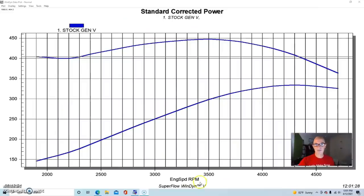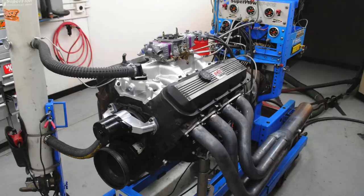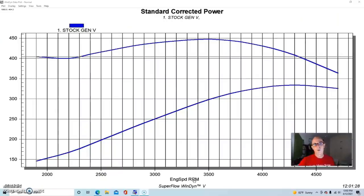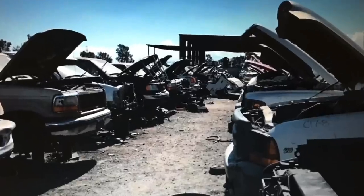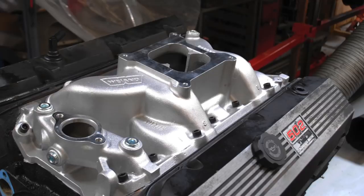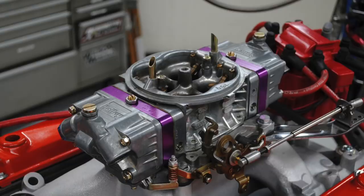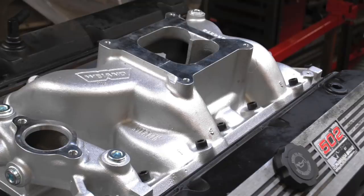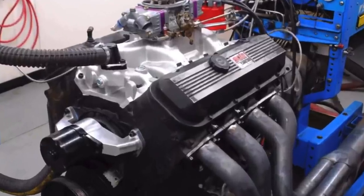To get things started we have to start out with a stock set on an otherwise stock motor. This is a 1992 throttle body injected gen 5, pretty typical of the breed. We got it from the wrecking yard, took the throttle body injection off, and equipped it with a dual plane four barrel carbureted intake, distributor, and 750 Holly. The intake we used was a Weiand Stealth dual plane intake manifold.